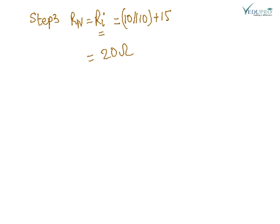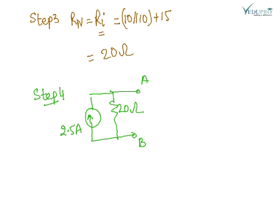The answer is coming out to be 20 ohm. Step 4 is to draw the Norton's equivalent circuit. This is the Norton's equivalent circuit, Rn and current source, 2.5 ampere. The current is flowing and the Norton's equivalent resistance is 20 ohm.